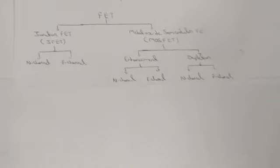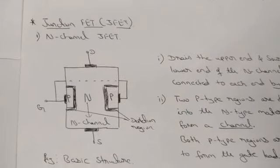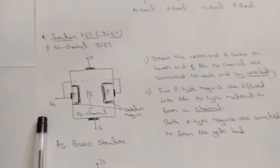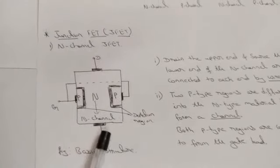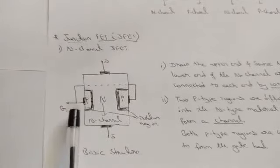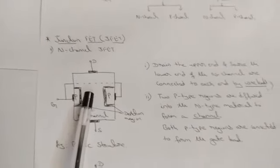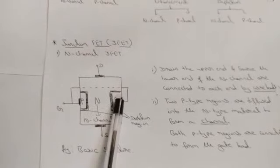Now we will go through the N-channel JFET basic structure and its operation. JFET has three terminals: gate, drain, and source. In an N-channel JFET, the source is placed below and drain above, with the gate on the side. The drain and source are connected using wire leads, and the gate is also connected by wire lead. The N-channel is formed when it is diffused between two P-type materials.